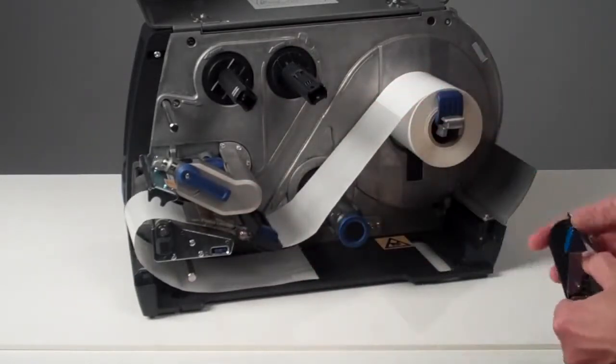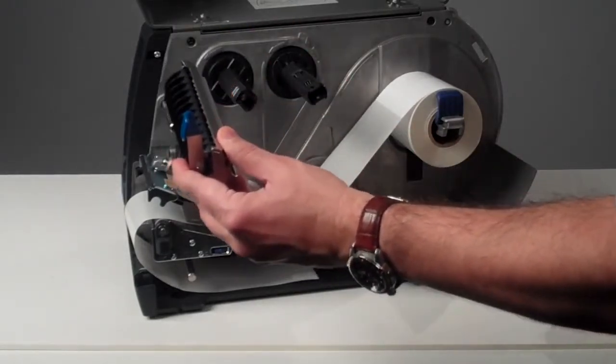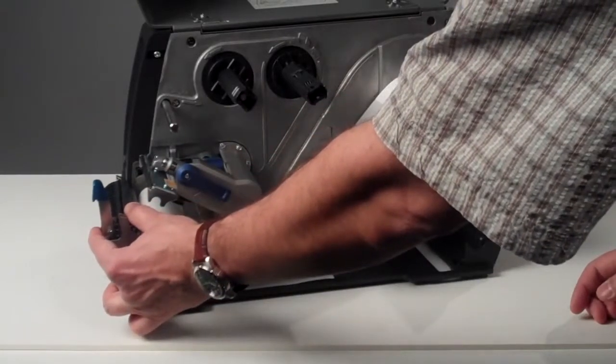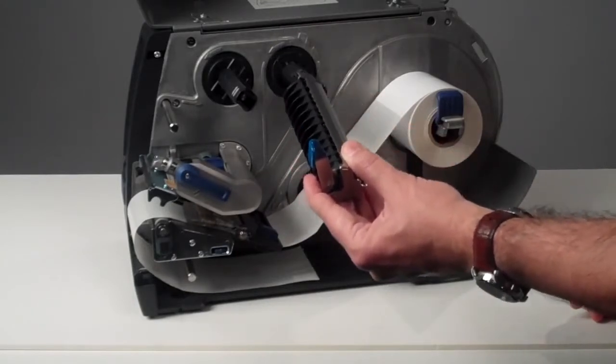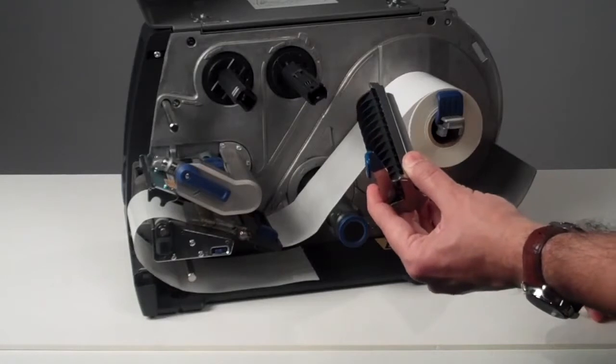The last way is to use the label dispenser, which is again a customer installable accessory. It comes in front of the printer. With a label dispenser, you can dispense the labels without using the rewinder, or you can dispense labels with a strong adhesive.